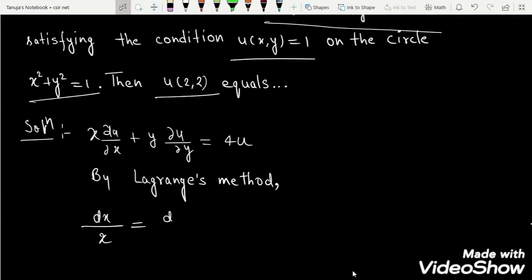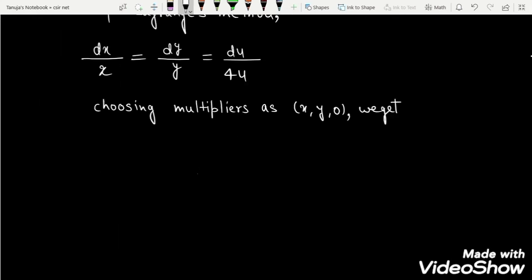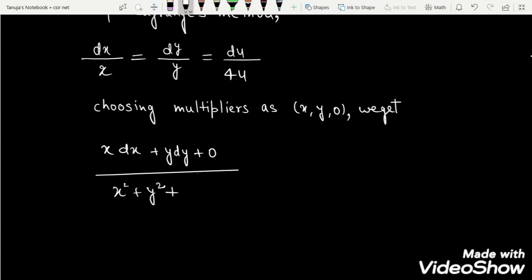By Lagrange's method we have dx/x equal to dy/y equal to du/4u. Now choosing multipliers as x, y, 0, we get x dx + y dy + 0 divided by x² + y² + 0, which equals x dx + y dy divided by x² + y².